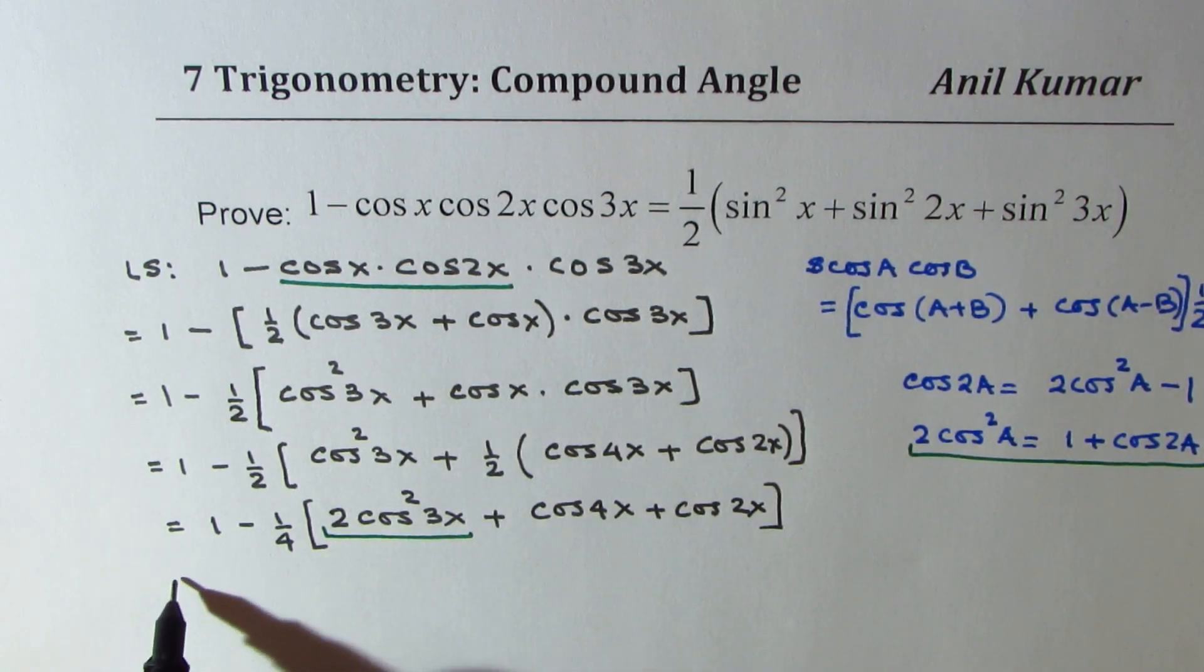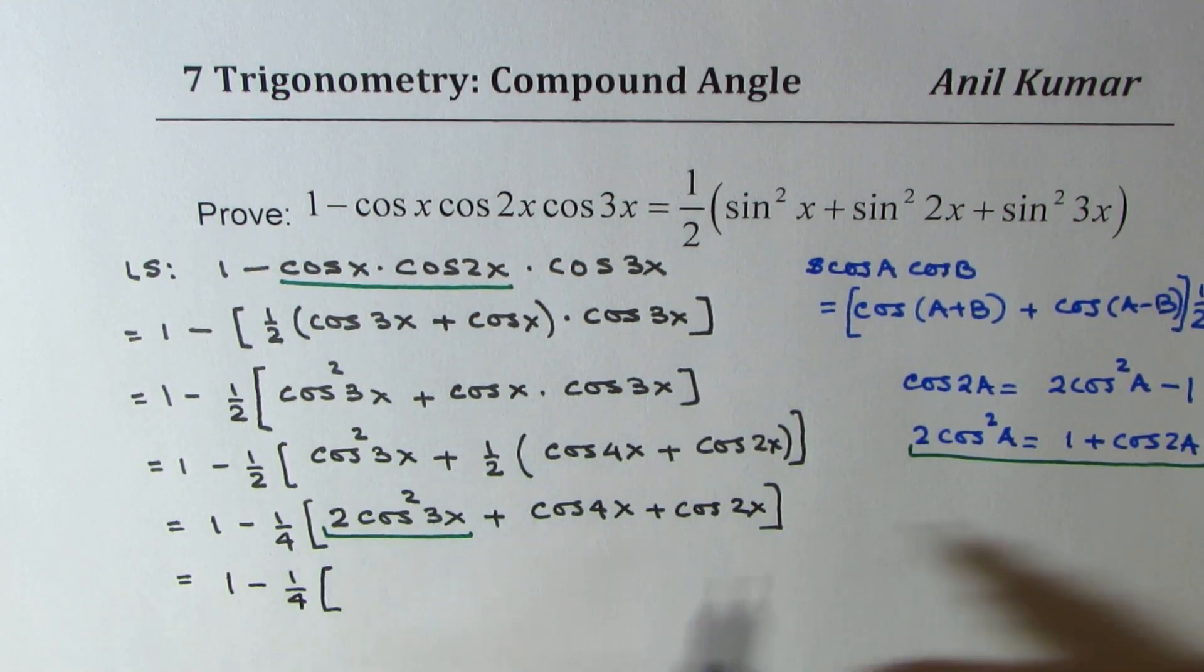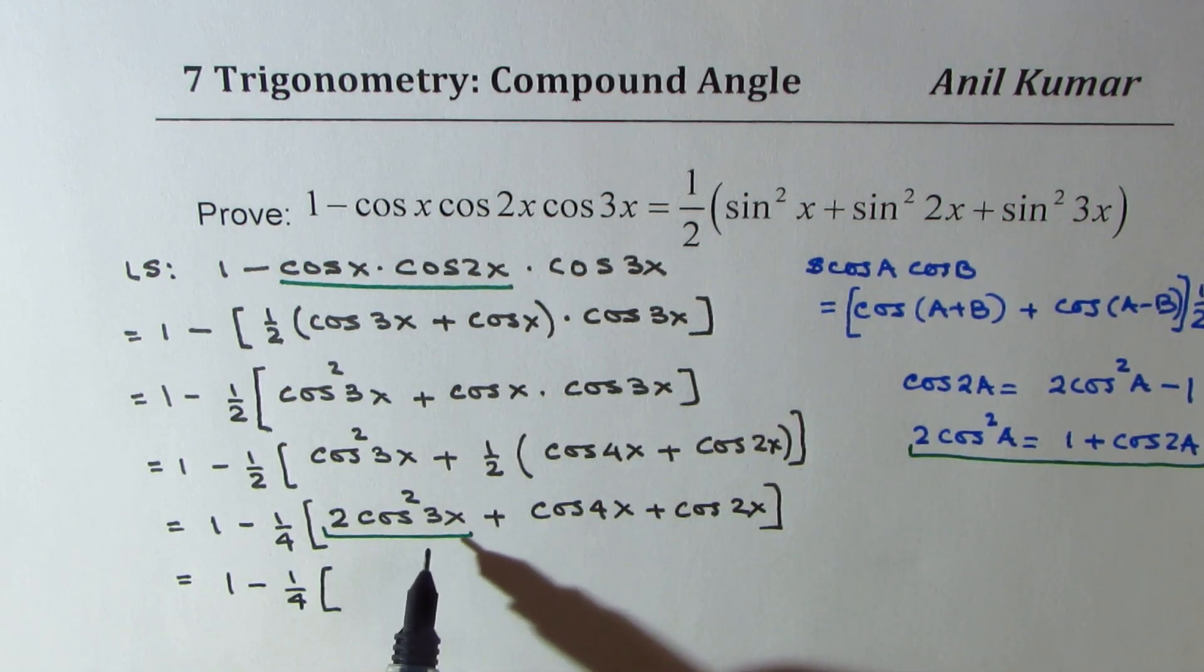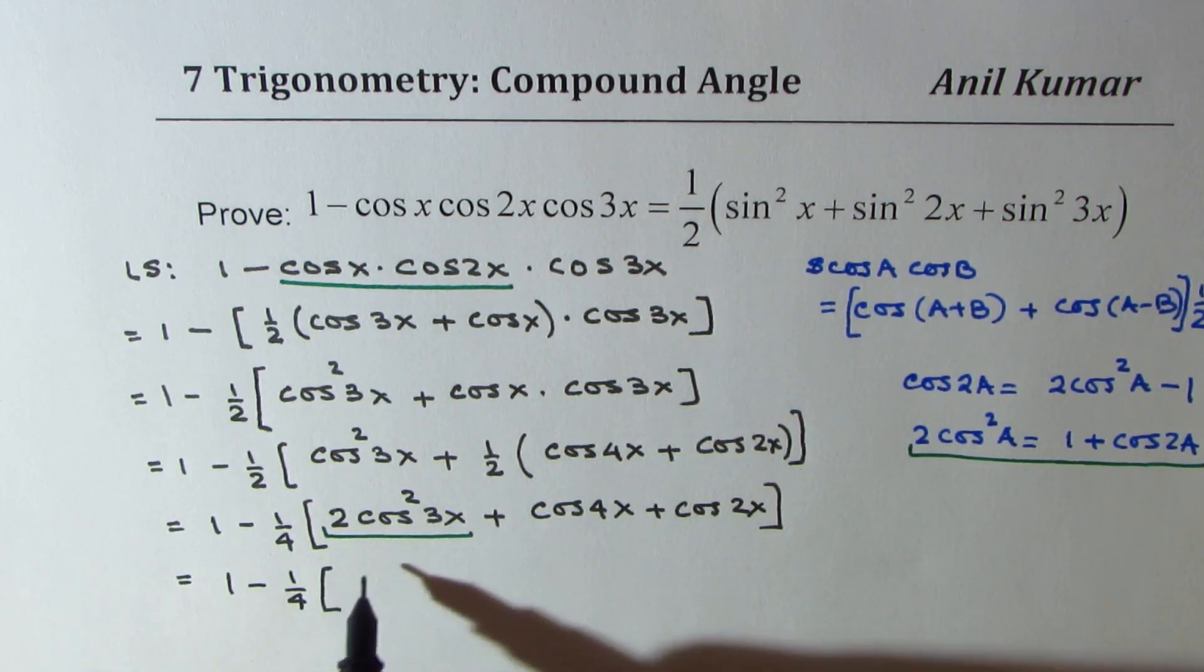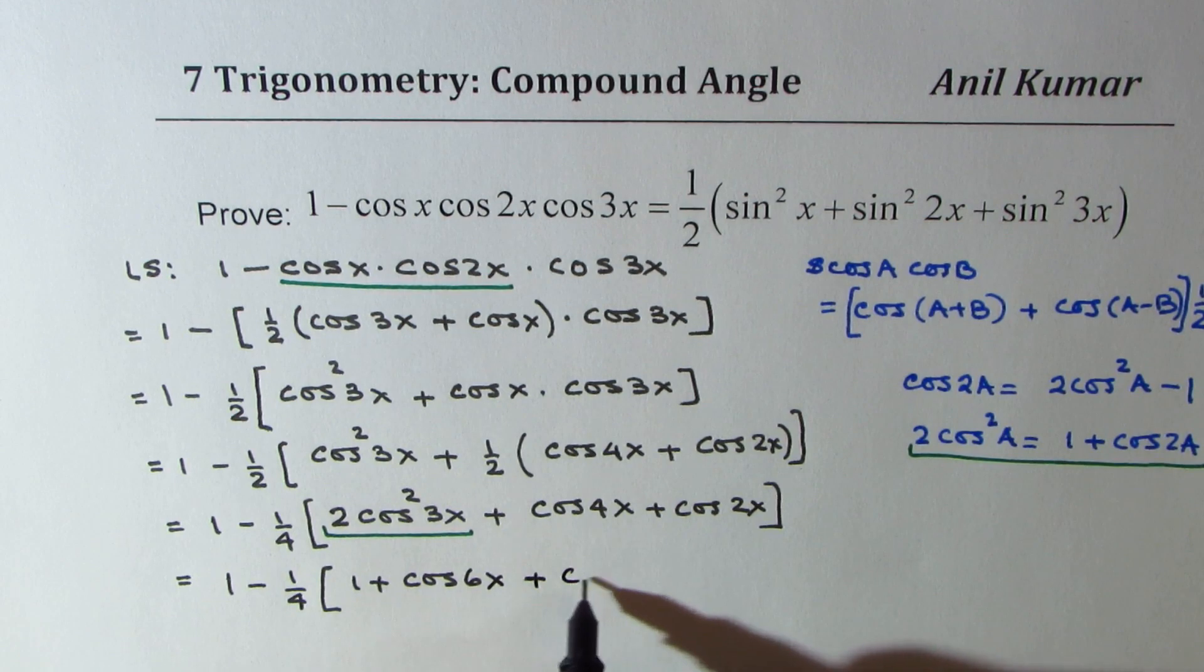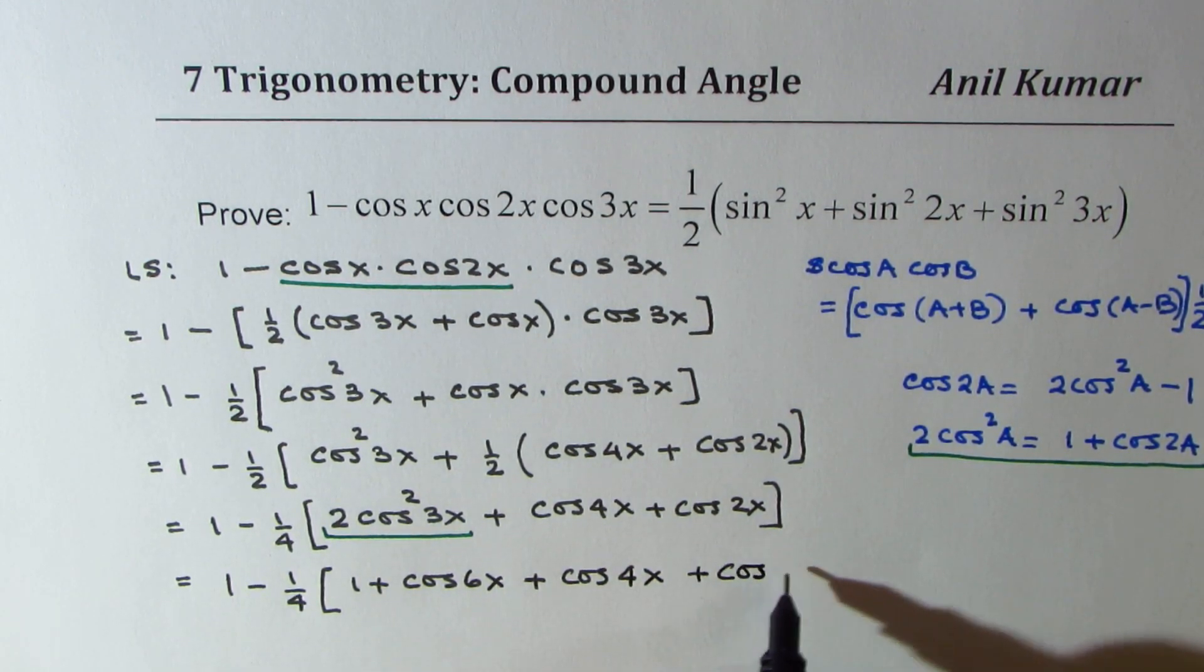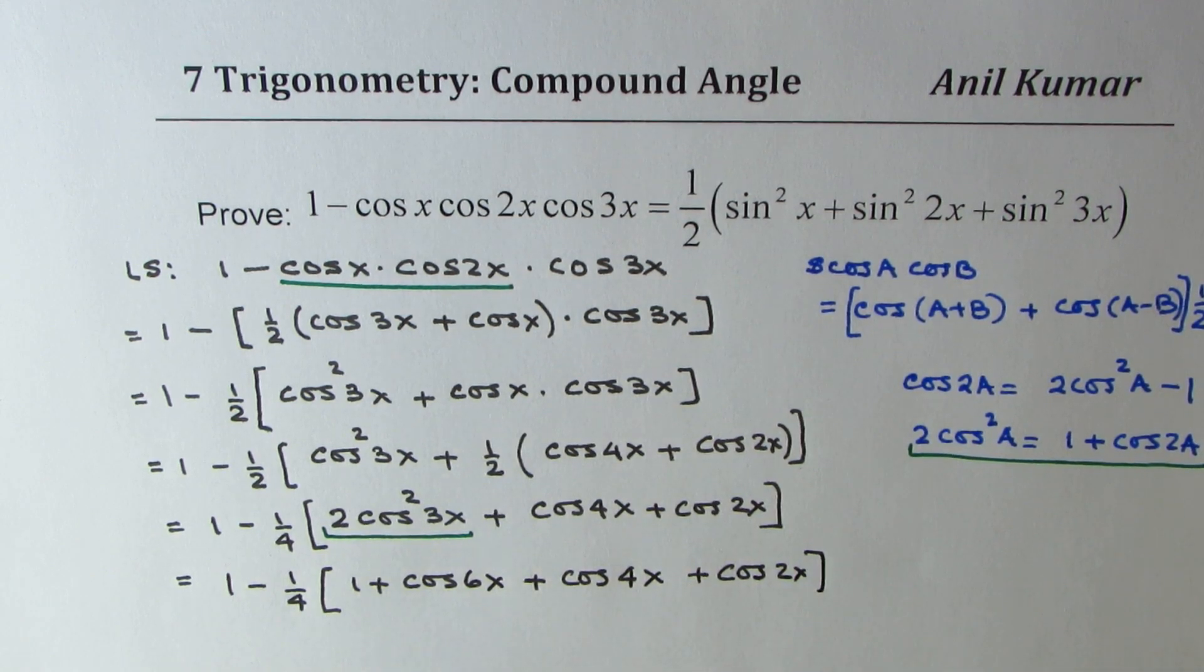So, what we get here is 1 minus 1 over 4. So, here I'm writing 1 plus cos 2a for 2 cos square 3x. So, twice 3 is 6. So, we get 1 plus cos 6x plus cos 4x plus cos 2x. So, I hope that is absolutely clear.